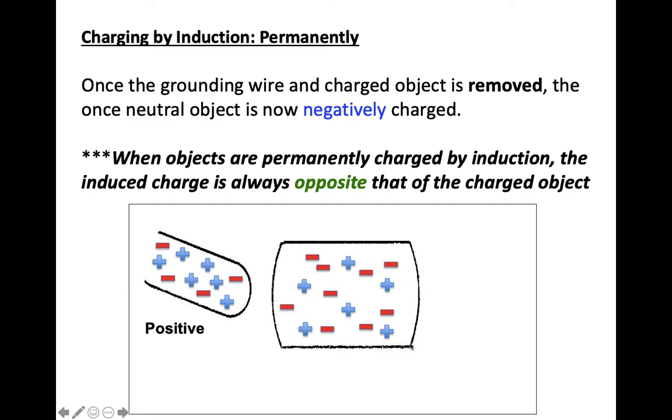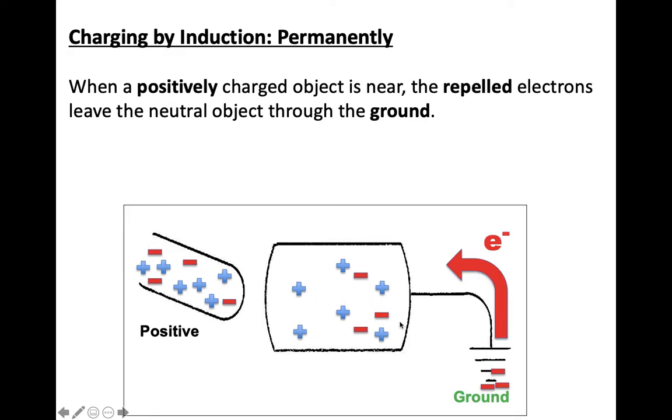Okay, so we can see here that electrons were coming into this object. Now I have more electrons than before. So these three should have been staying in this neutral object and we added three more coming up from the ground when we have a positive charged object near.